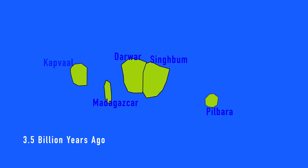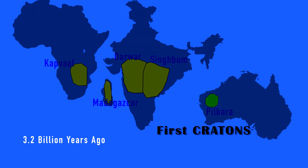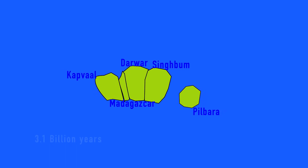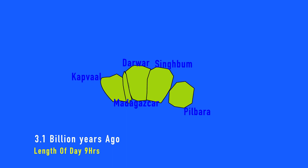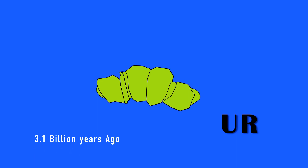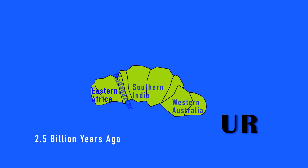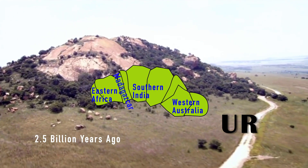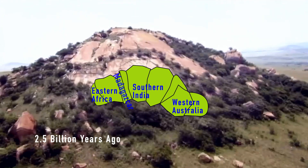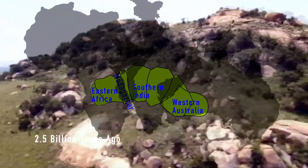These earliest cratons of Earth are now part of bigger landmasses like Africa, Madagascar, India, and Australia. As time passed, these early cratons moved close to each other and joined to form the first super-continent of our Earth, which J.J. Rogers named Ur. Later, more magma formation happened and Ur became bigger. Some scientists call this bigger Ur 'Extended Ur,' constituting what is now Eastern Africa, Madagascar, Southern India, and Western Australia. If we go to these places in Africa, India, and Australia shown on the map, we will see similar-looking places which were once together as the super-continent Ur.